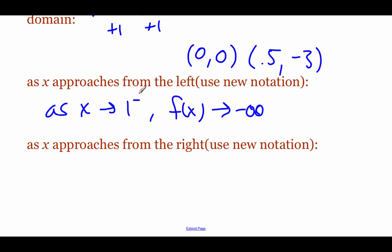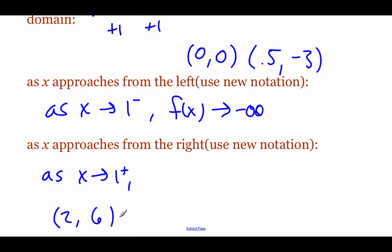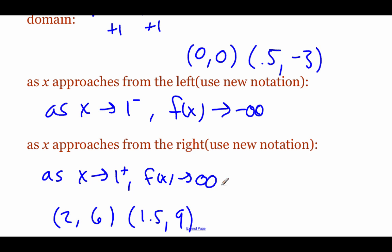If we approach x equals one from the right-hand side, plugging in test values: two is to the right of one, and that gives us six. Moving closer to one — plugging in 1.5 gives us nine. As we get closer to one from the right-hand side, our f of x values are going to approach positive infinity.